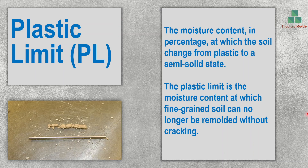Plastic Limit is the moisture content in percentage at which the soil changes from plastic to semi-solid state. The plastic limit is the moisture content at which fine-grained soil can no longer be molded without cracking. This criterion is also used in testing to recognize this limit.